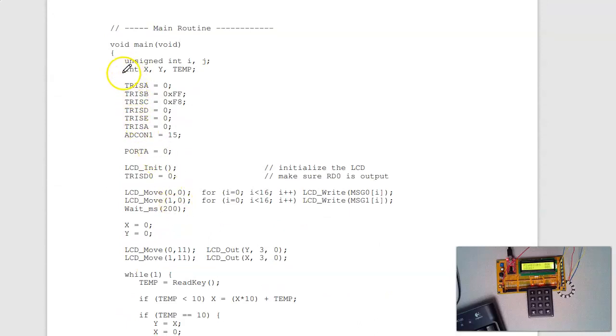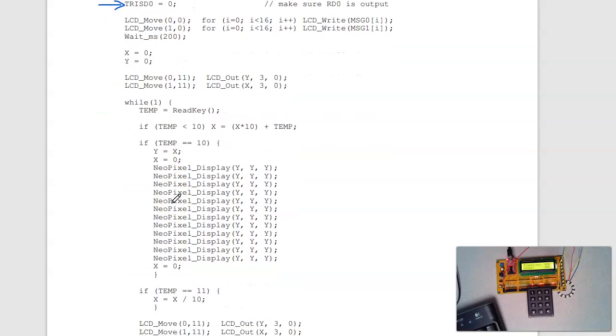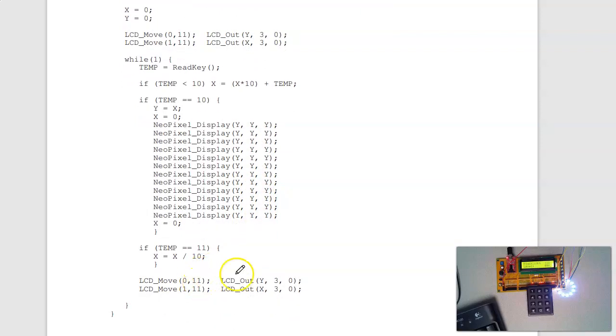The main routine is to initialize the IO ports, talk to the display. I'm going to force port d pin 0 to output. That's where I'm talking to the NeoPixel, right here. And then the main loop. I'm going to keep on looping, reading the keypad. So if I type the number 1, 2, 3, that gets added in right here. When I hit the pound button, that's the scan code of 10. It then copies x to y, displays y on all NeoPixels, clears x. And then at the end, I display on the LCD display the two numbers.